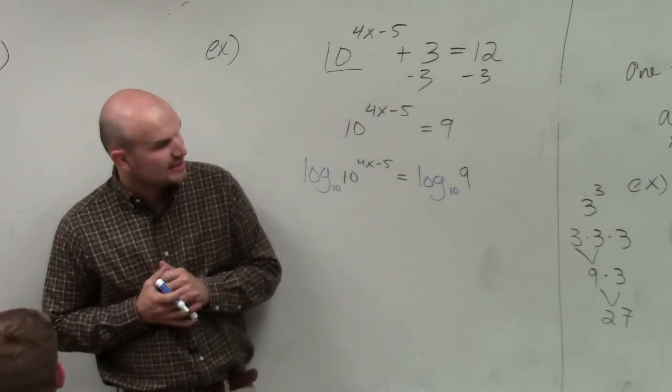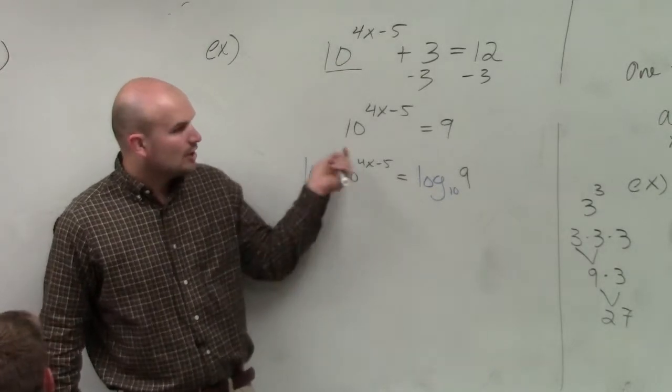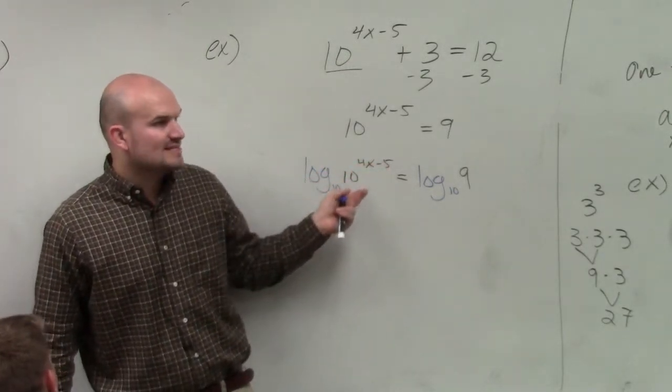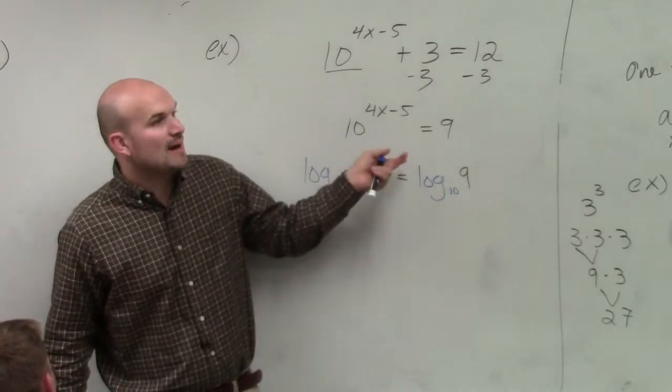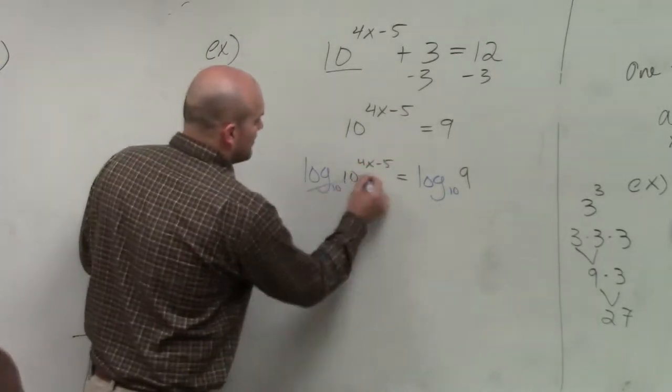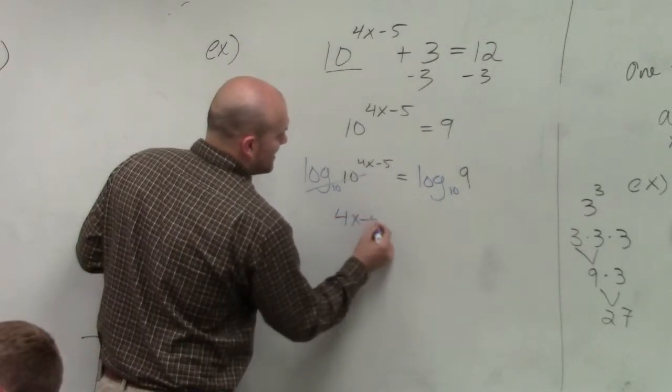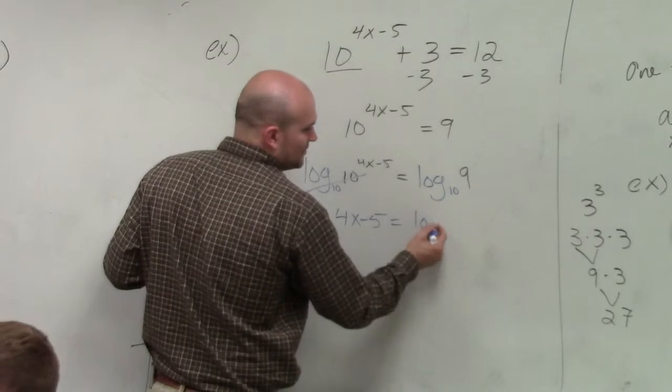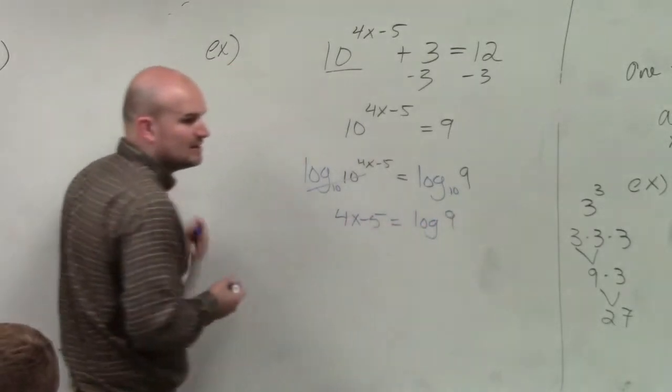So when you guys are looking at this, remember log base 10 of 10 raised to a power. Well, log base 10 of 10 is equal to 1, right? And when it's raised to the power, it's just going to equal that power. So we're left with 4x minus 5 equals log of 9. We don't really need to write the base 10.